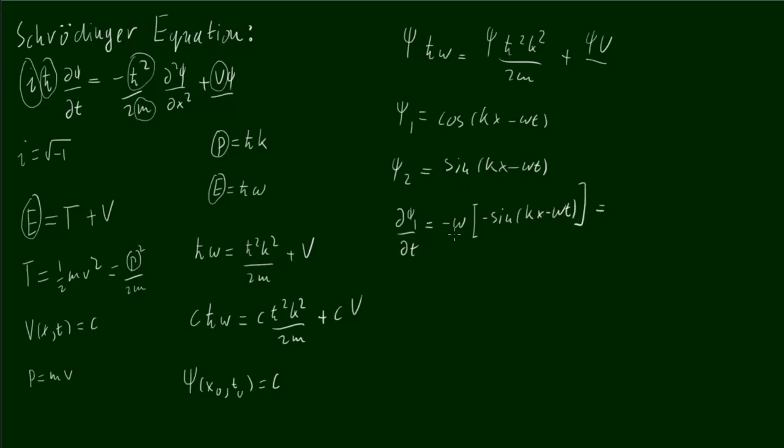If we look at this, we notice that it's actually the same as this. The thing inside the bracket is this. So, the derivative of psi 1 with respect to time is just omega multiplied by psi 2.